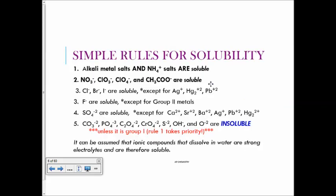Simple rules for solubility — you don't have to memorize every single rule, but the ones in bold at the top are very important. Alkali metal salts and ammonium salts are always soluble — it doesn't matter if they're with carbonate or phosphate or hydroxide. Any time you have group 1 or ammonium, it's always soluble. The other key rule: nitrates and nitrites are always soluble.